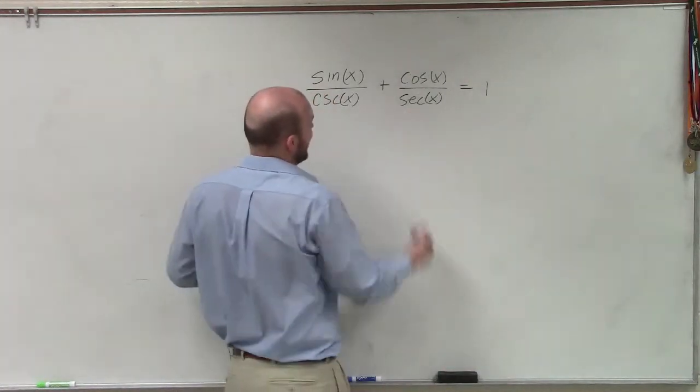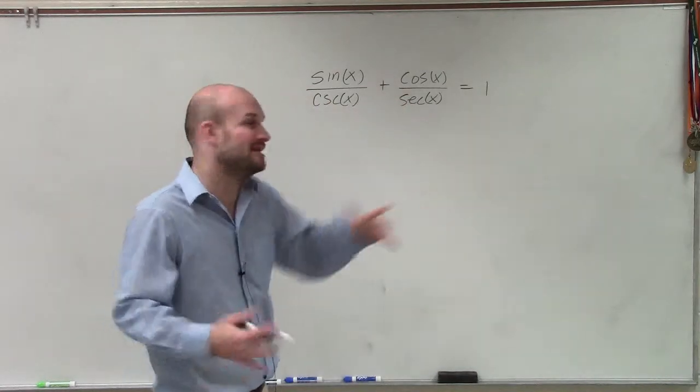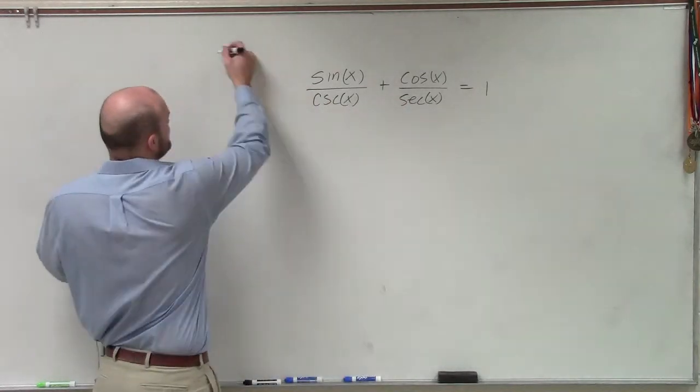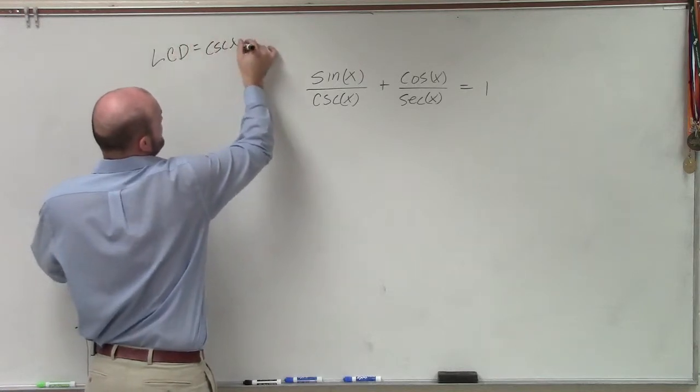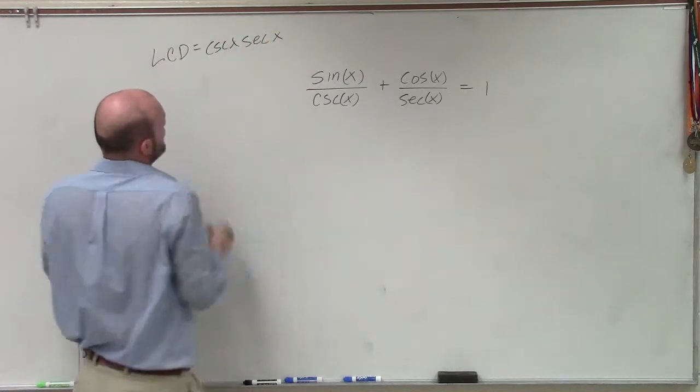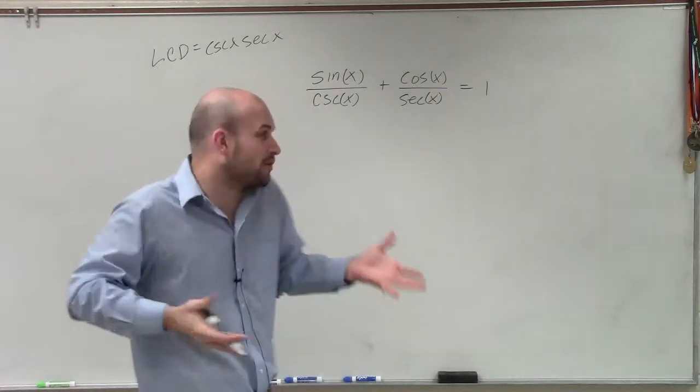But I look at this and say, I really don't want to find the common denominator of cosecant and secant, meaning I have to multiply both terms. Actually, well, I can find it. The LCD is just going to be csc(x) times sec(x). And therefore, I'd have to multiply both terms over there, cancel, combine. But then I have to do more work.